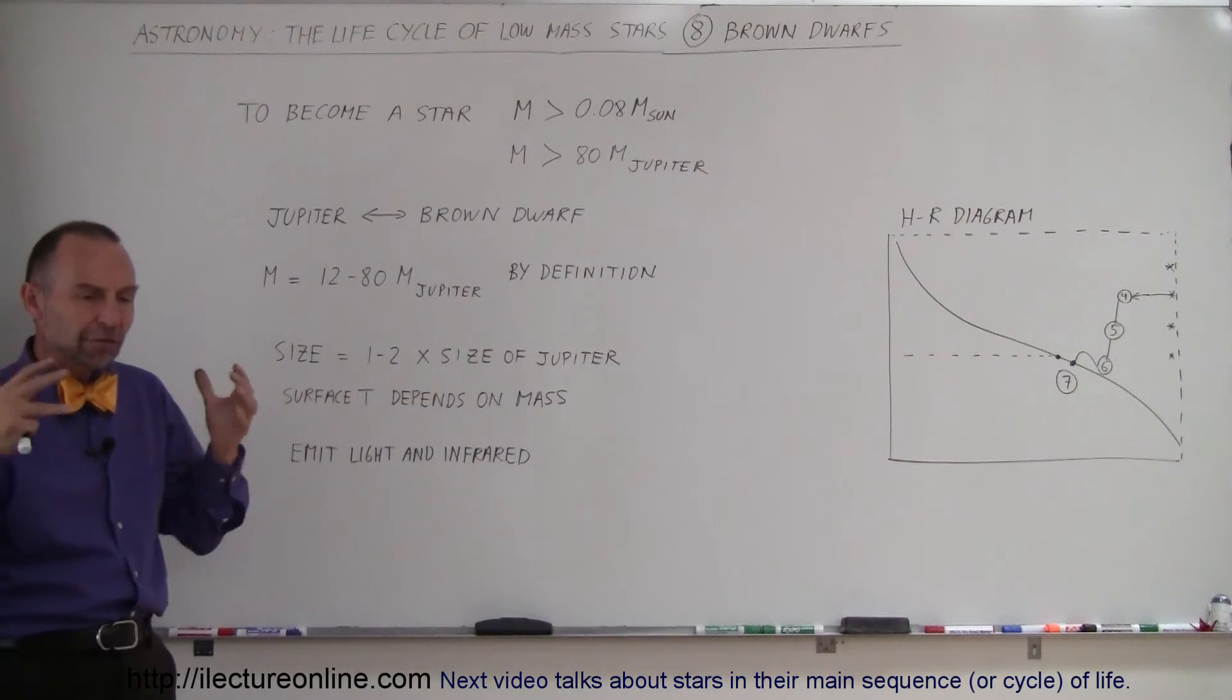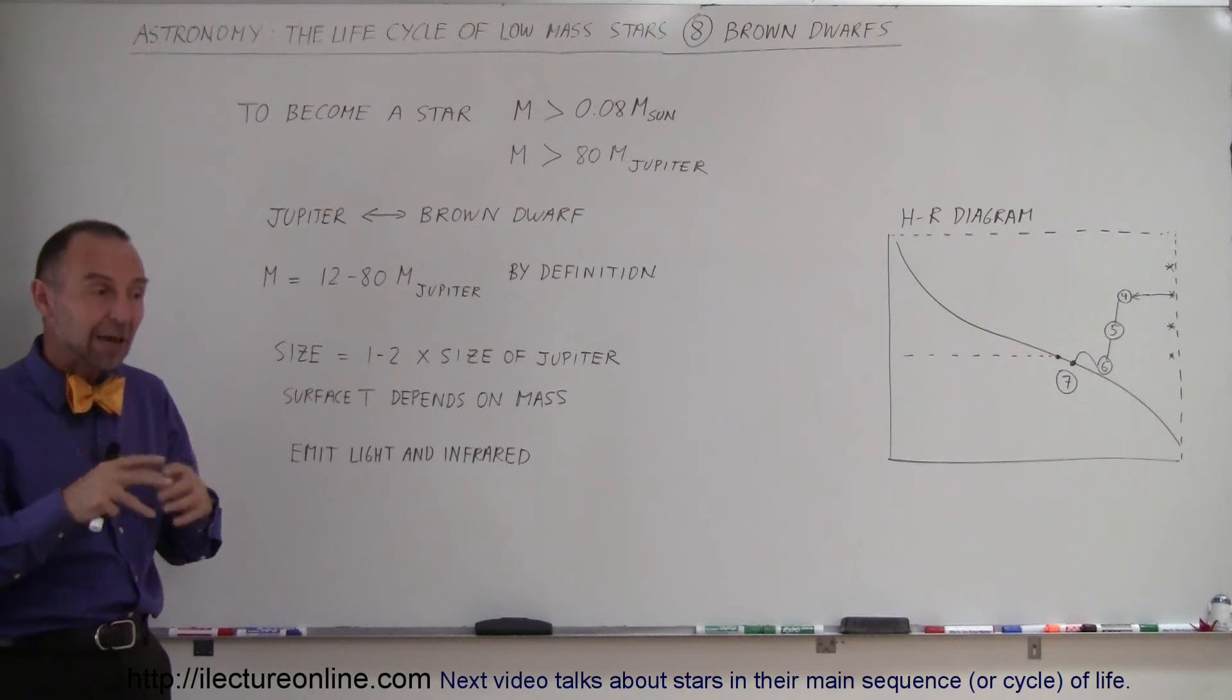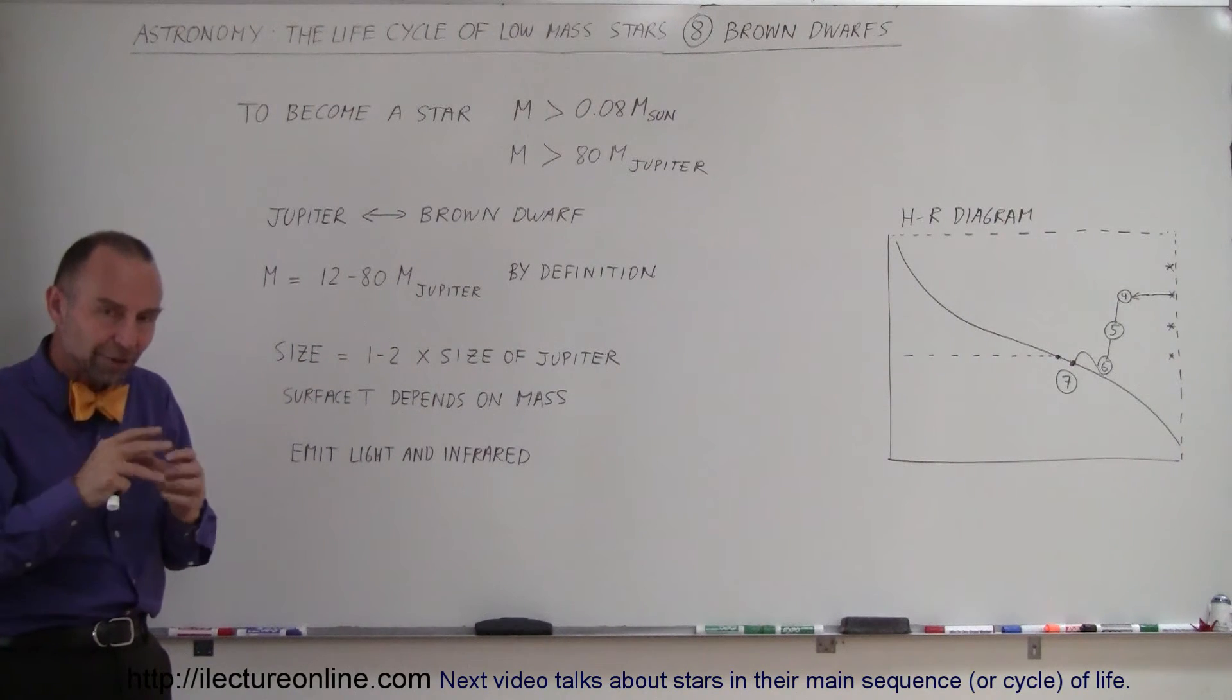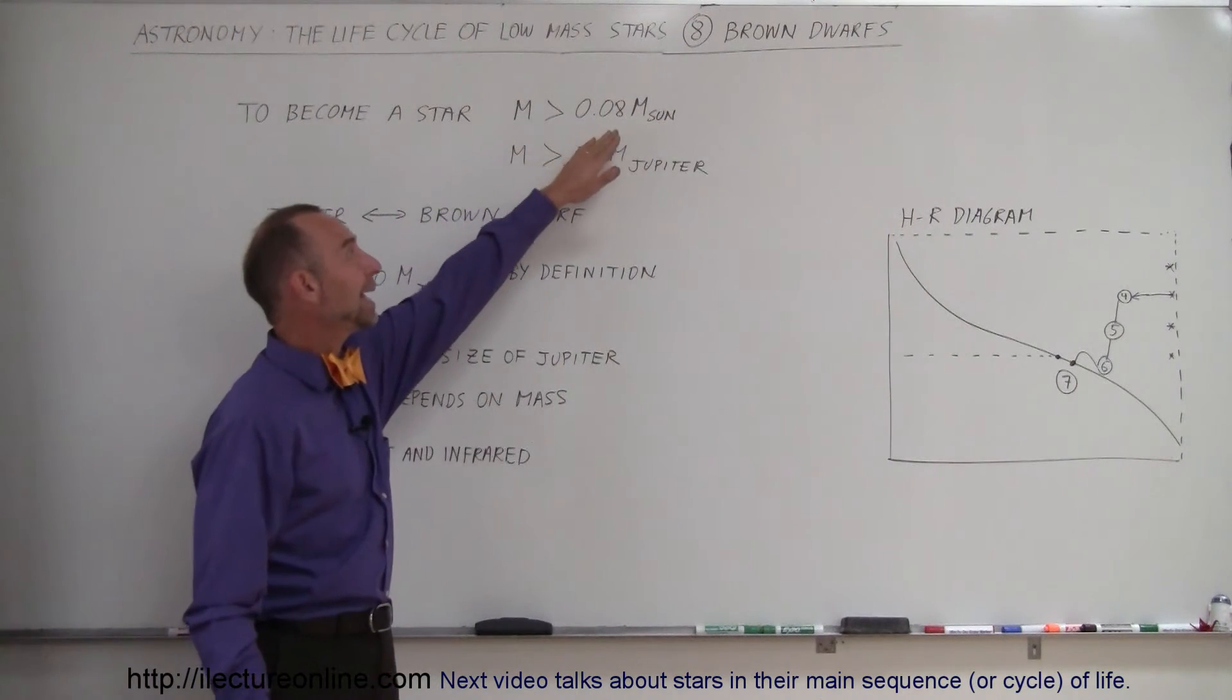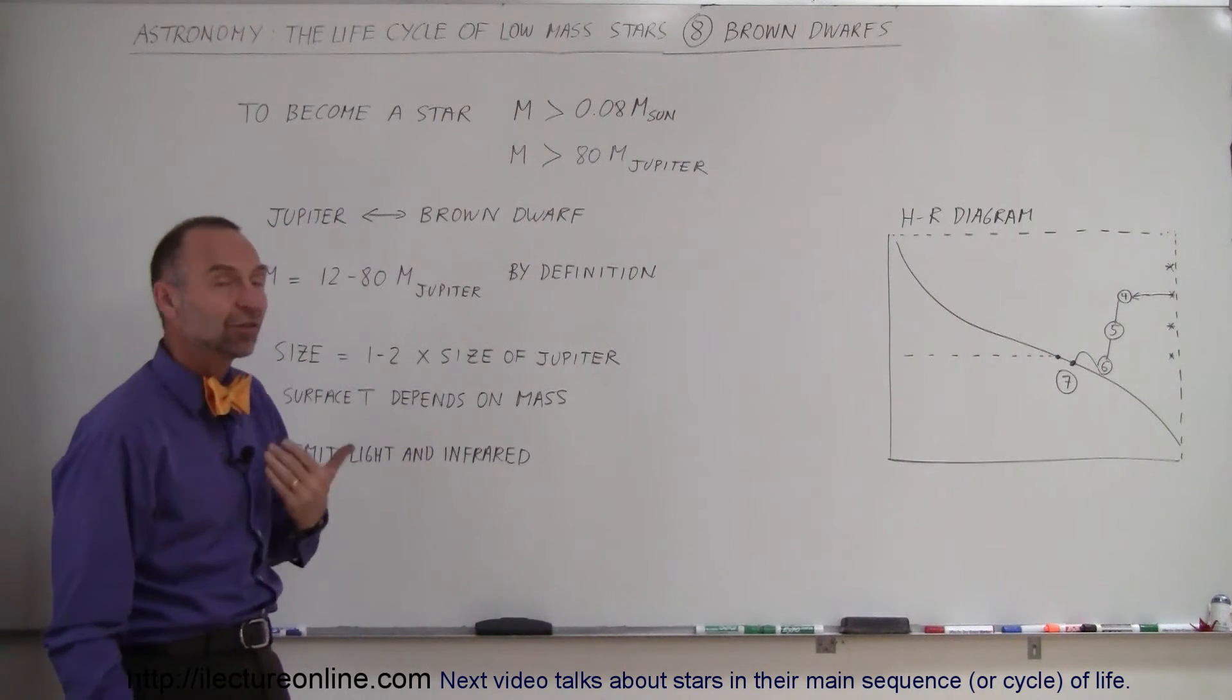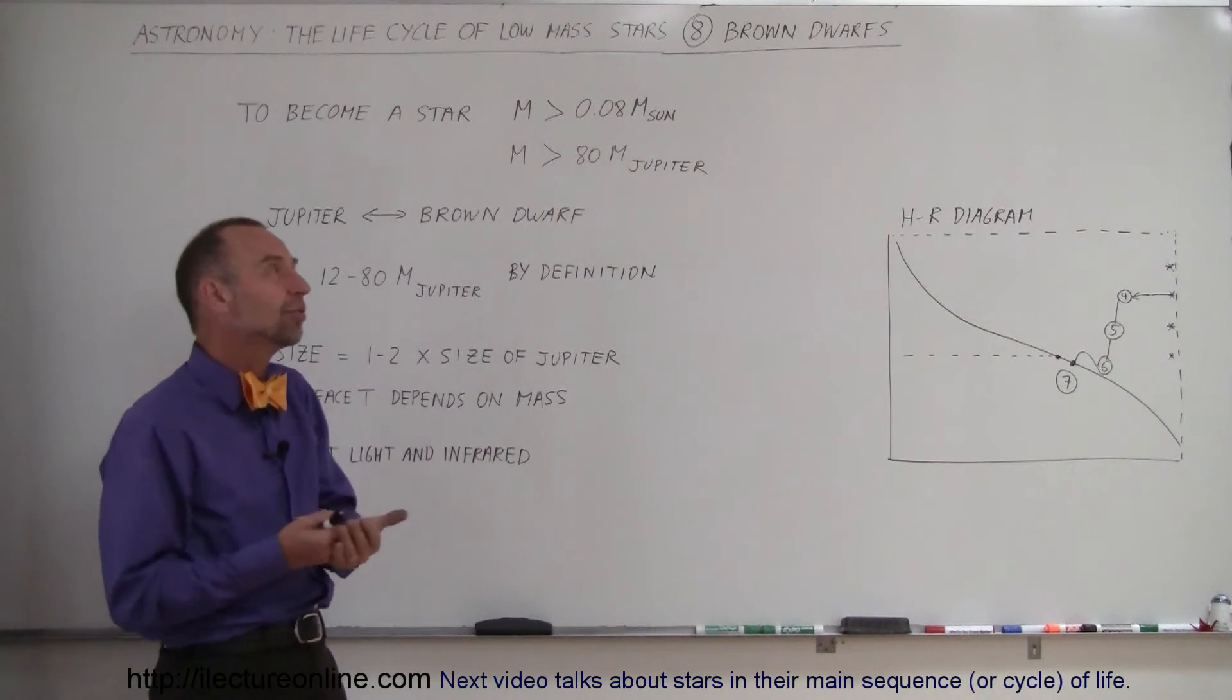For enough heat to be built up, enough pressure needs to be built up because of gravity. You have to have enough mass for gravity to push it together tight enough and dense enough for the temperature to reach 10 million degrees. The required mass is at least 0.08 times the mass of the Sun, or 8% the mass of the Sun, for a star to become a main sequence star.